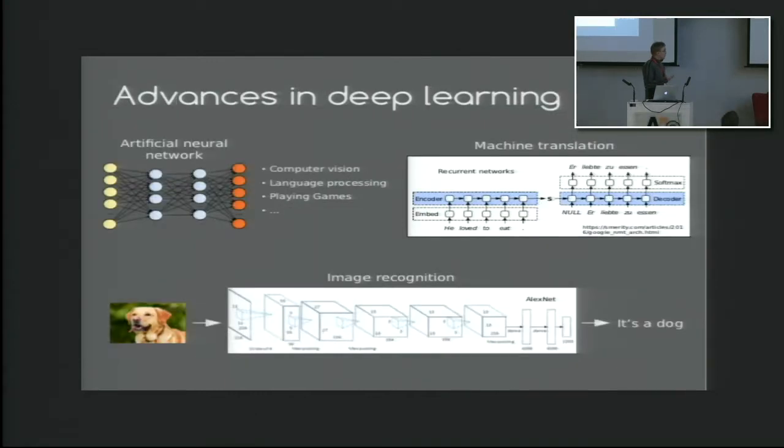Now, in deep learning, there have been all these tremendous advances in computer vision, language processing, playing games, and all these things. For us, the interesting thing is this image recognition task and the convolutional neural networks that have been used for this task.